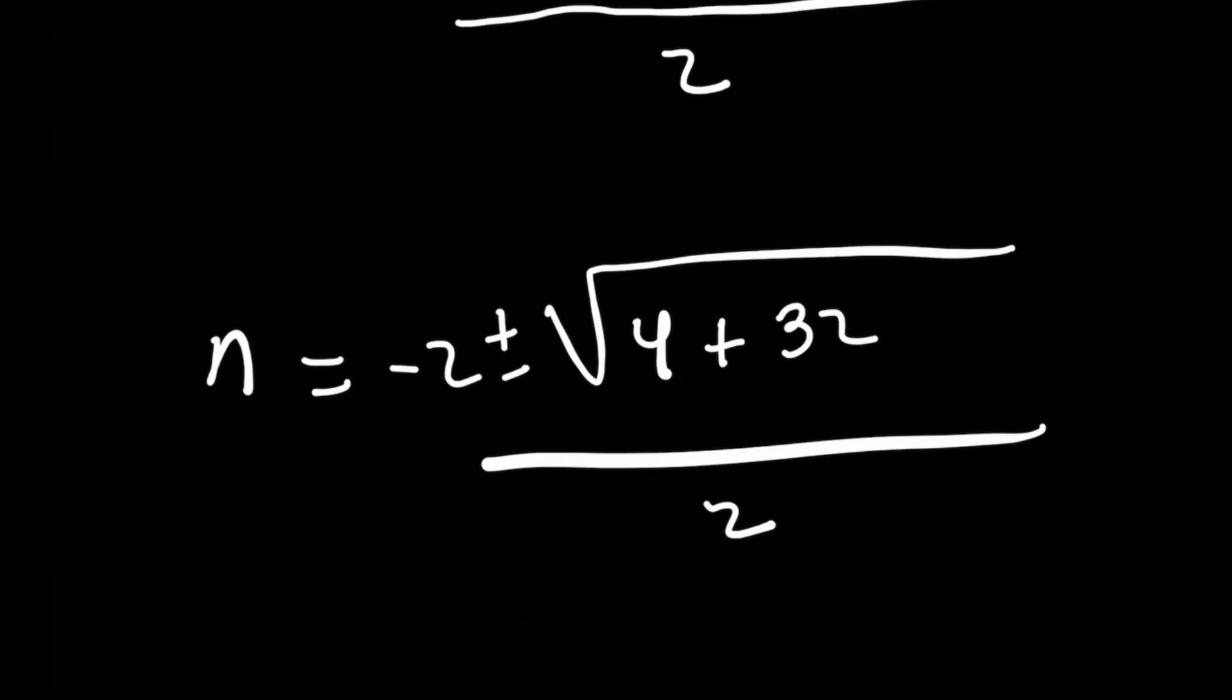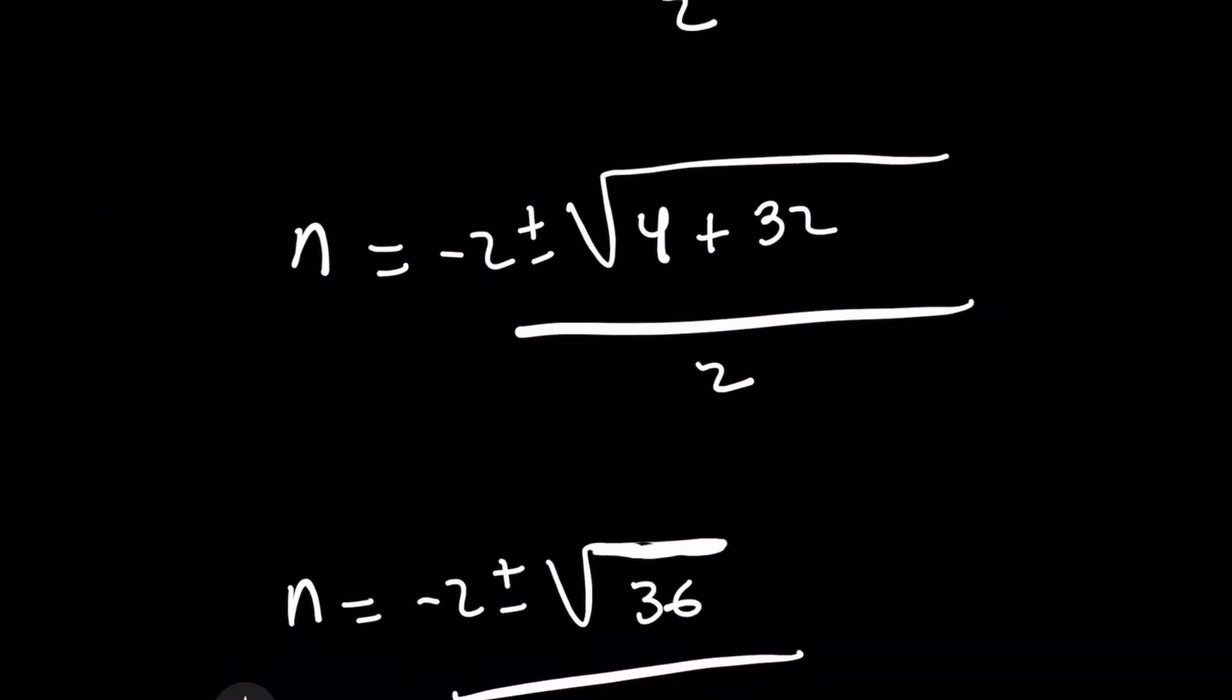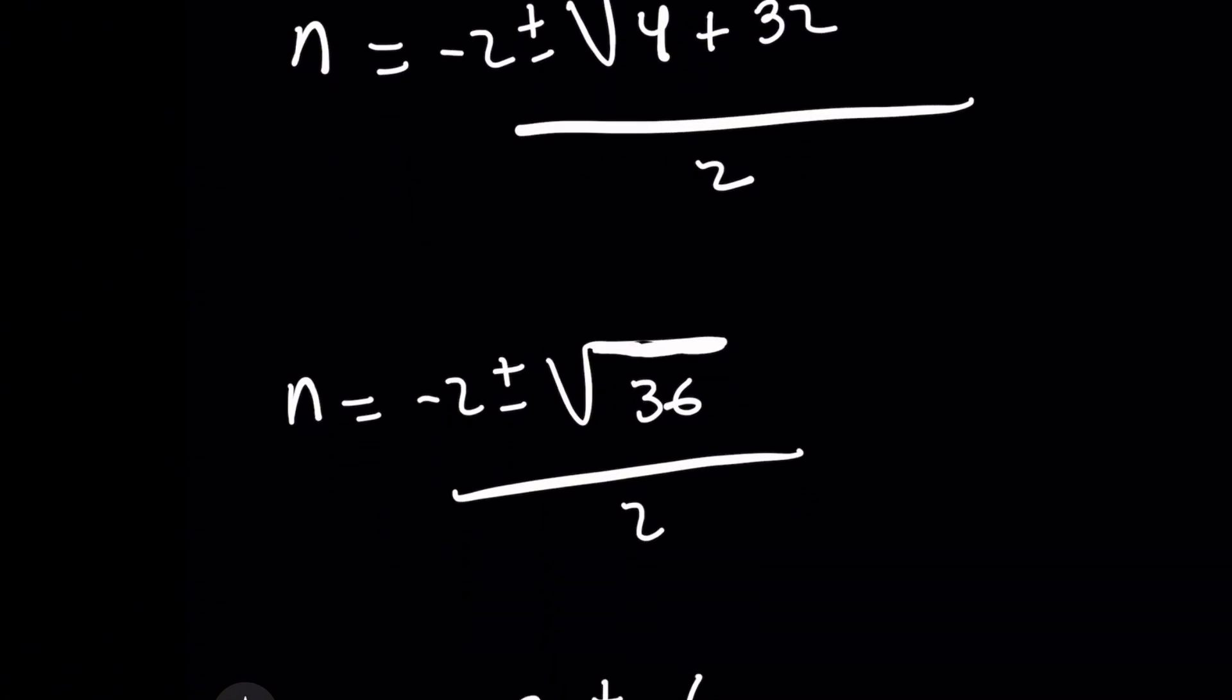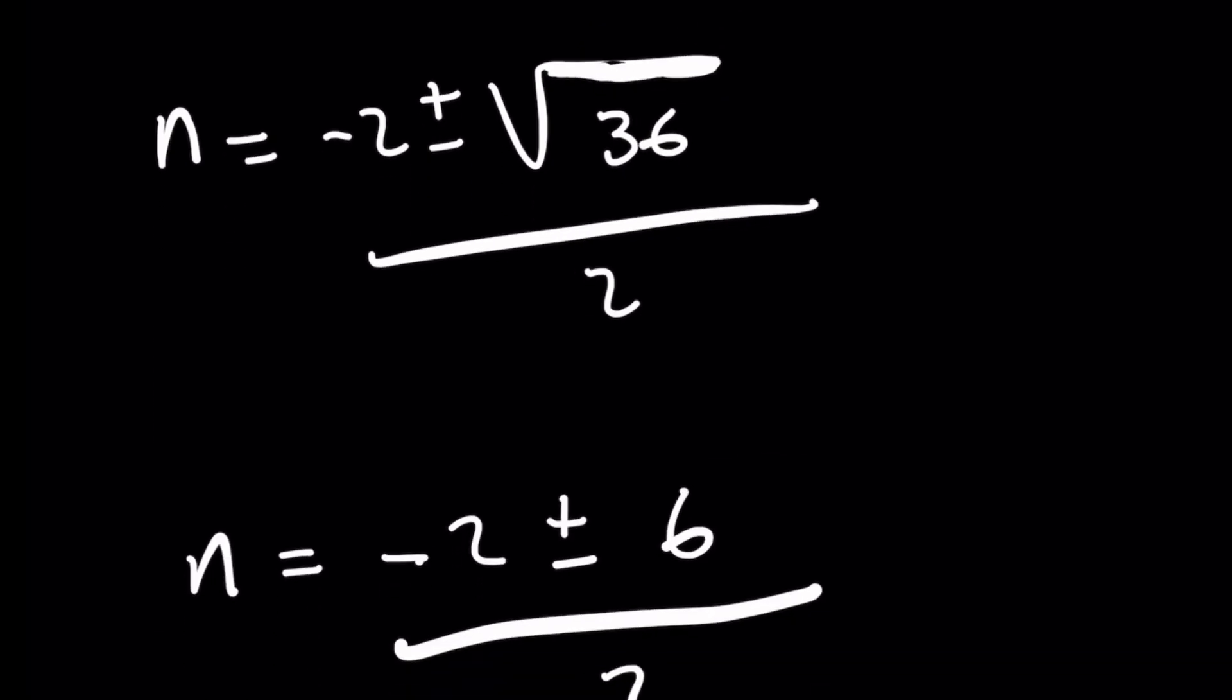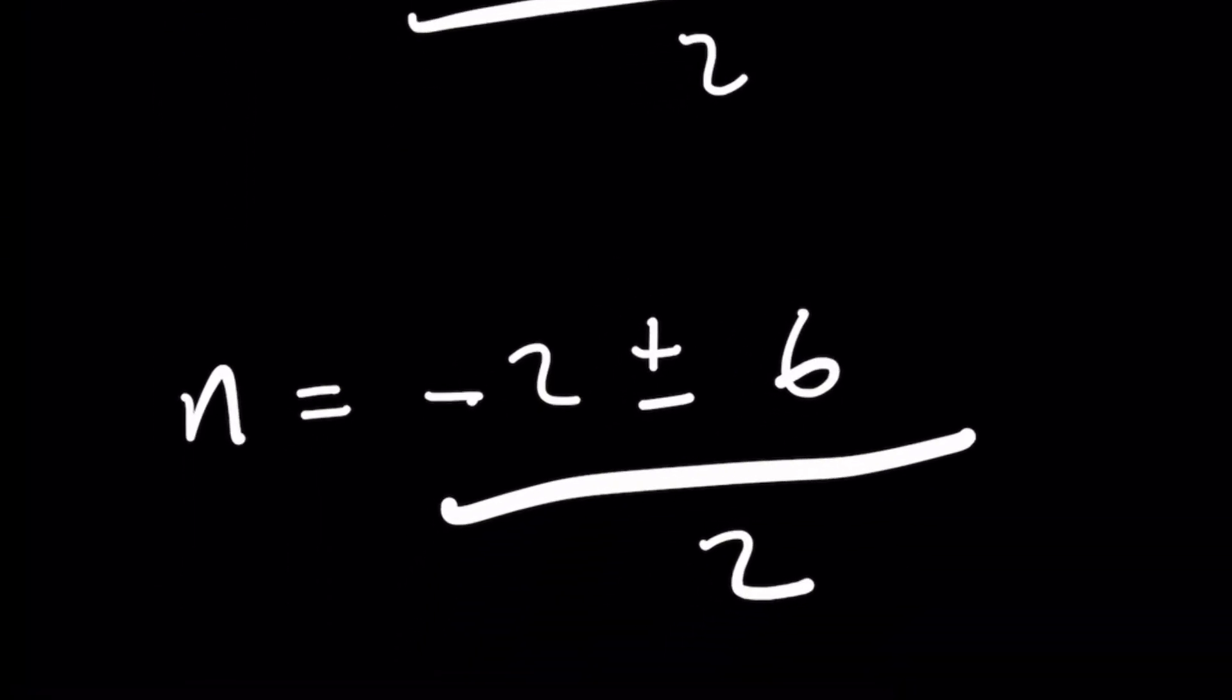you'll get negative 2 plus or minus the square root of 4 plus 32 over 2, leaving you with negative 2 plus or minus the square root of 36 over 2. And that's really nice because we know that 6 squared is 36.